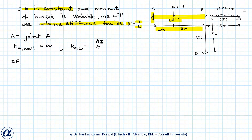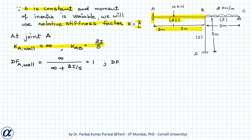The distribution factor at A for the wall is k_A_wall (infinite) divided by the sum of all stiffness factors at joint A (infinite + 2I/5), which equals 1. The distribution factor at A for member AB is (2I/5) divided by (infinite + 2I/5), which equals 0.